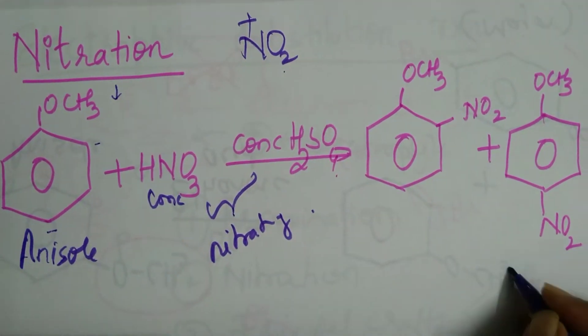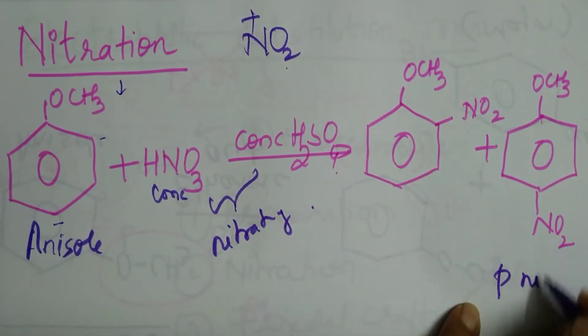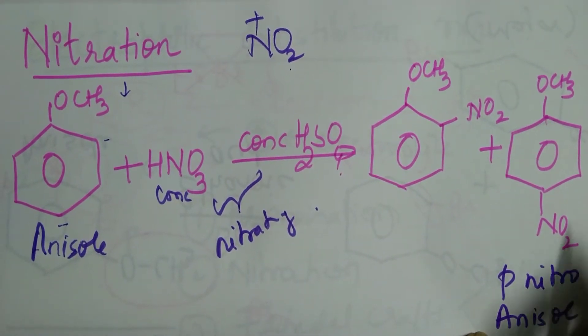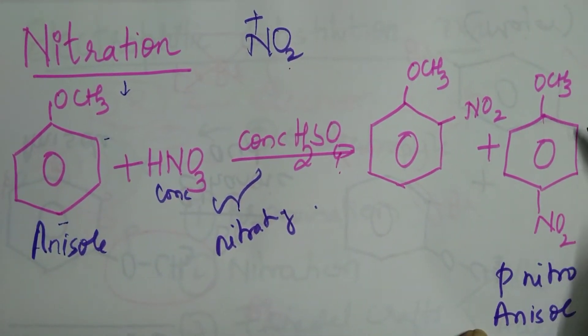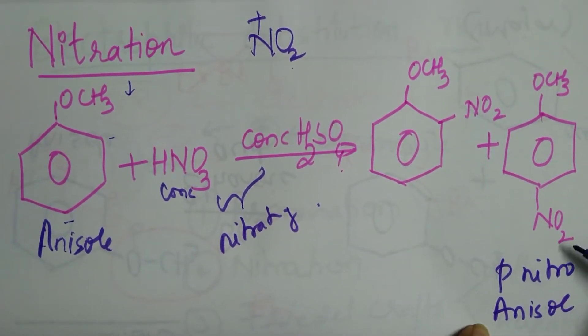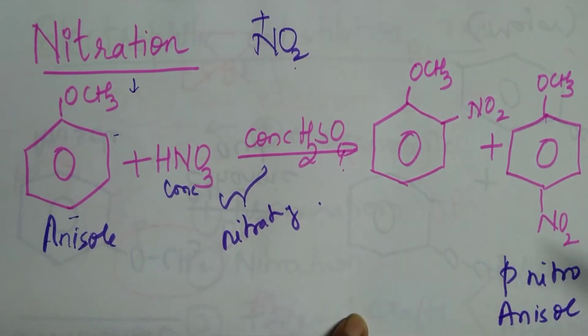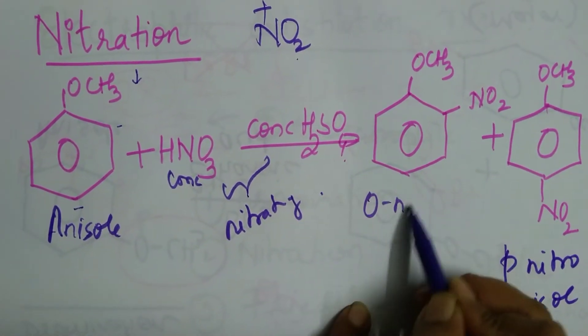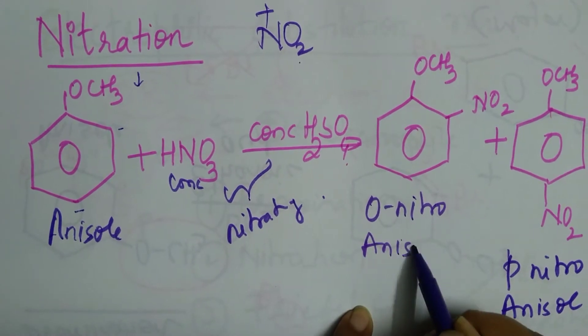Now, can you tell me which is the major product here? It should be para-nitroanisole. Why? Because of steric hindrance. It cannot attack here. So probability of NO2 attacking at para position is more. I hope you have understood. So this is ortho-nitroanisole.